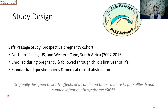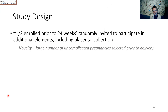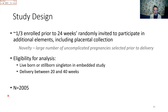Roughly one third of participants enrolled prior to 24 weeks gestation were randomly invited to participate in additional study elements including placental collection. This is the true novelty of the dataset — we expected a large number of uncomplicated pregnancies selected prior to the onset of complications or knowing the delivery outcome. To be eligible, the pregnancy needed to result in a live-born or stillborn singleton between 20 and 40 weeks gestation with the placenta collected, yielding 2,005 participants in this analysis.